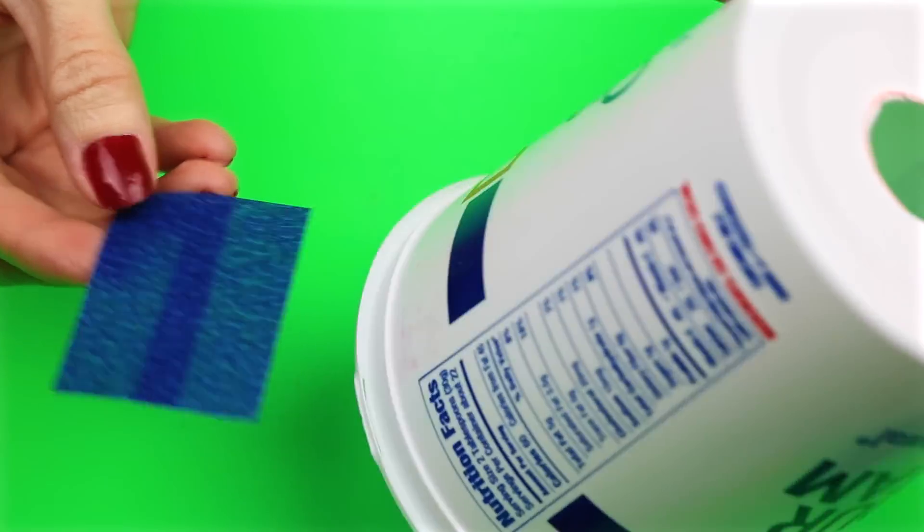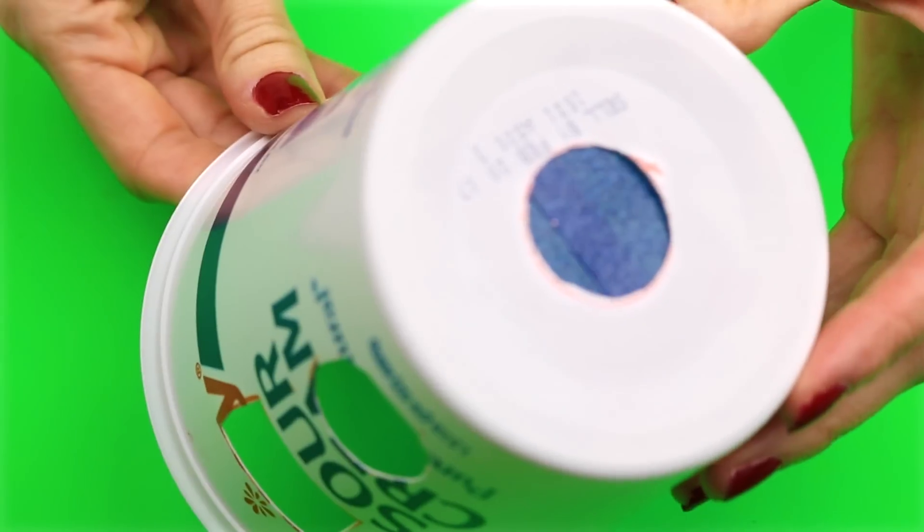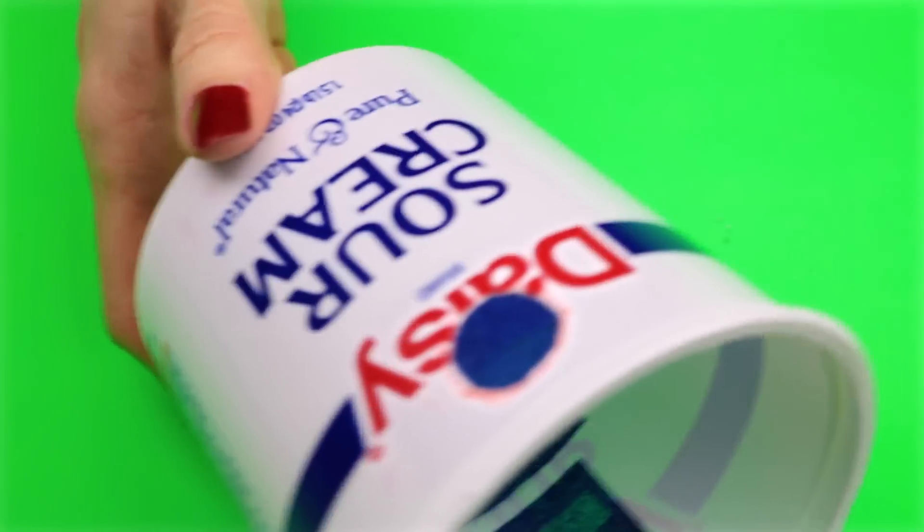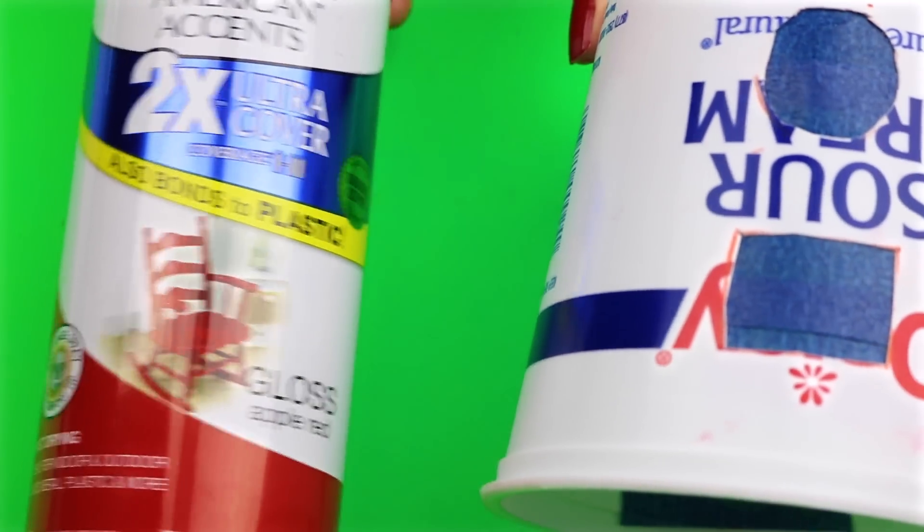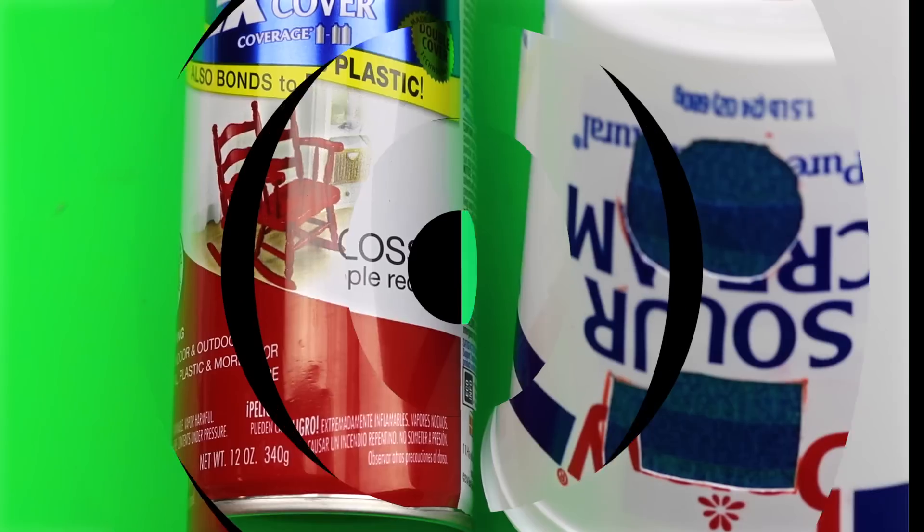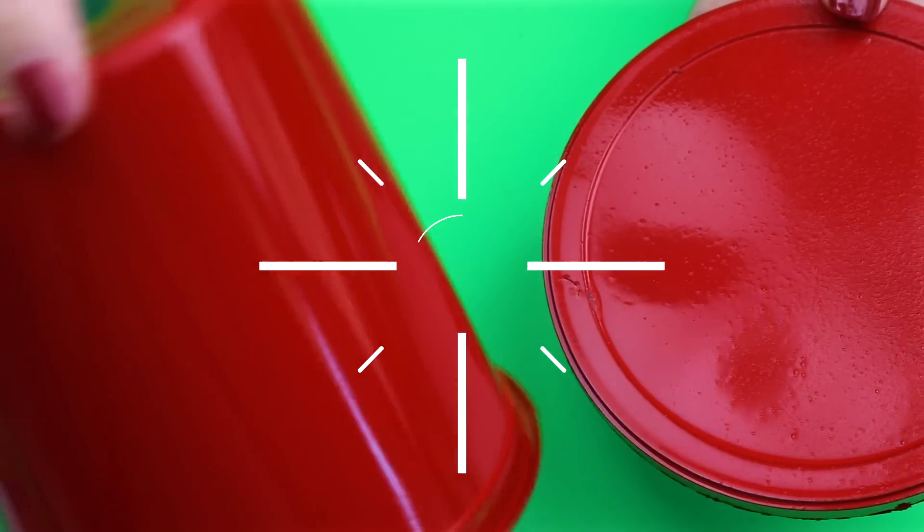With some painter's tape I taped up all the holes on the inside. I used some red spray paint to paint the container. Here are the container and lid once they were painted.